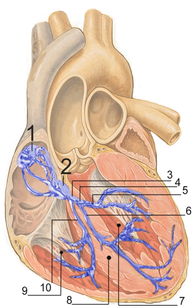The two bundle branches taper out to produce numerous Purkinje fibers, which stimulate individual groups of myocardial cells to contract. The spread of electrical activity through the ventricular myocardium produces the QRS complex on the ECG. Atrial repolarization occurs and is masked during the QRS complex by ventricular depolarization on the ECG.